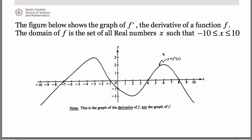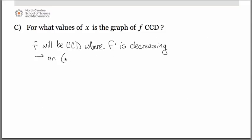There are two such intervals. It looks like the derivative decreases from negative 3 down to about 2, and then from 6 — remembering that the function is defined only from negative 10 to 10, so we do need an endpoint for that second interval. Also remember that concavity intervals are always open intervals; it would be incorrect to state them as closed intervals. So we have the interval from negative 3 to 2, and from 6 to 10.